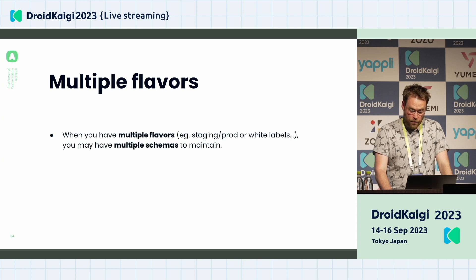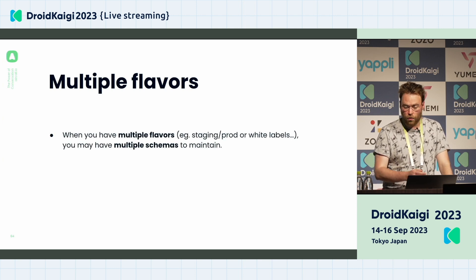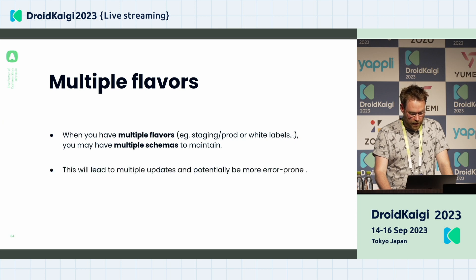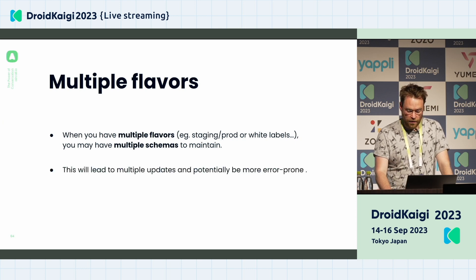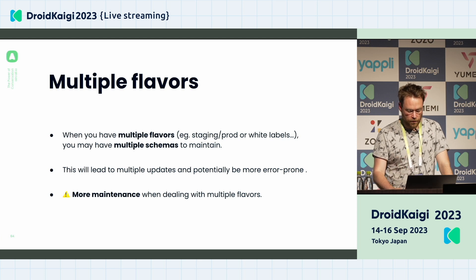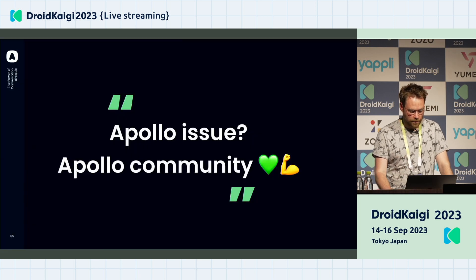When you have multiple flavors — for example staging, production, or any white labels — you may have to handle multiple schemas to maintain. This will lead to multiple updates and be more error-prone. Just keep that in mind.